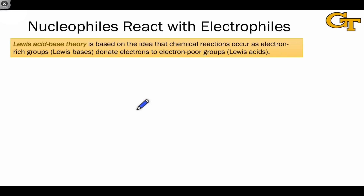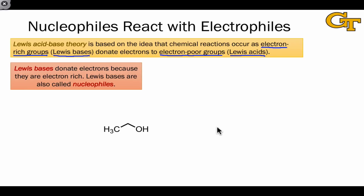The Lewis acid-base theory is based on the idea that chemical reactions occur because groups or atoms that are electron-rich — that have an excess of electrons, which we call Lewis bases — donate electrons to groups that are electron-poor or electron-deficient, that we call Lewis acids. In organic chemistry, the terms nucleophile and electrophile are used more commonly. But a nucleophile just is a Lewis base. Lewis bases donate electrons from their electron-rich regions, and so being able to identify electron-rich regions within molecules is a fundamental skill in predicting organic reactivity.